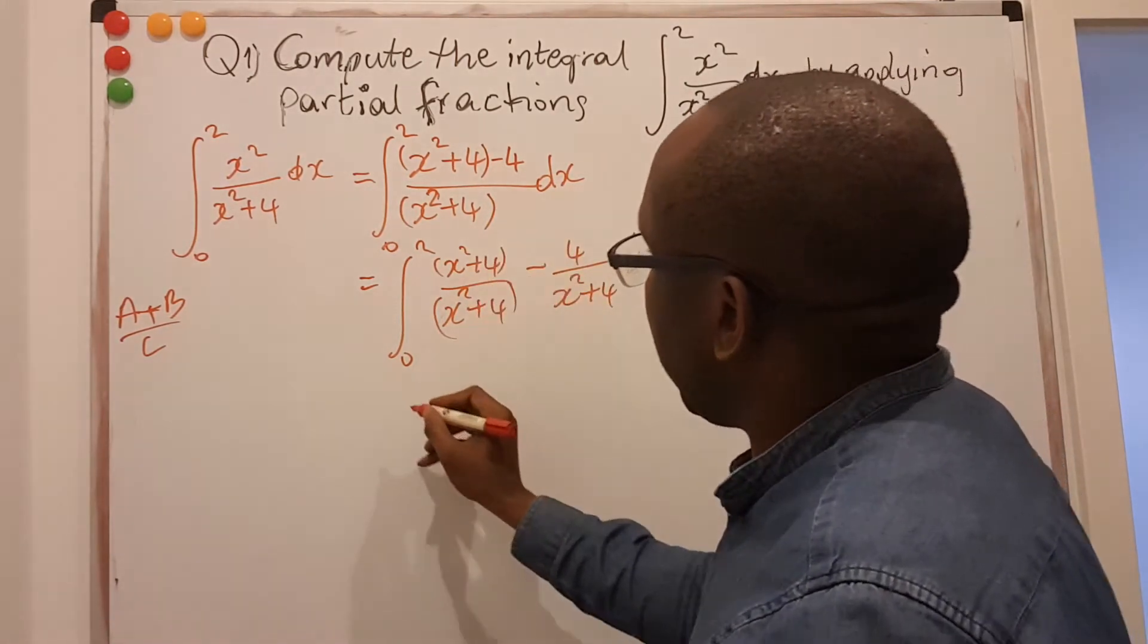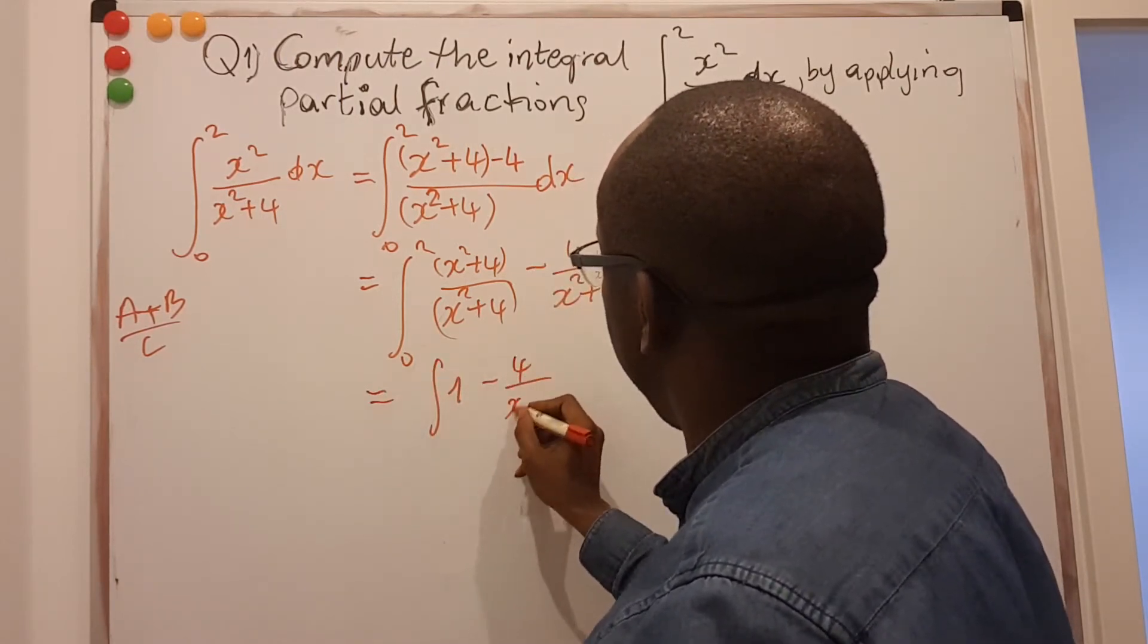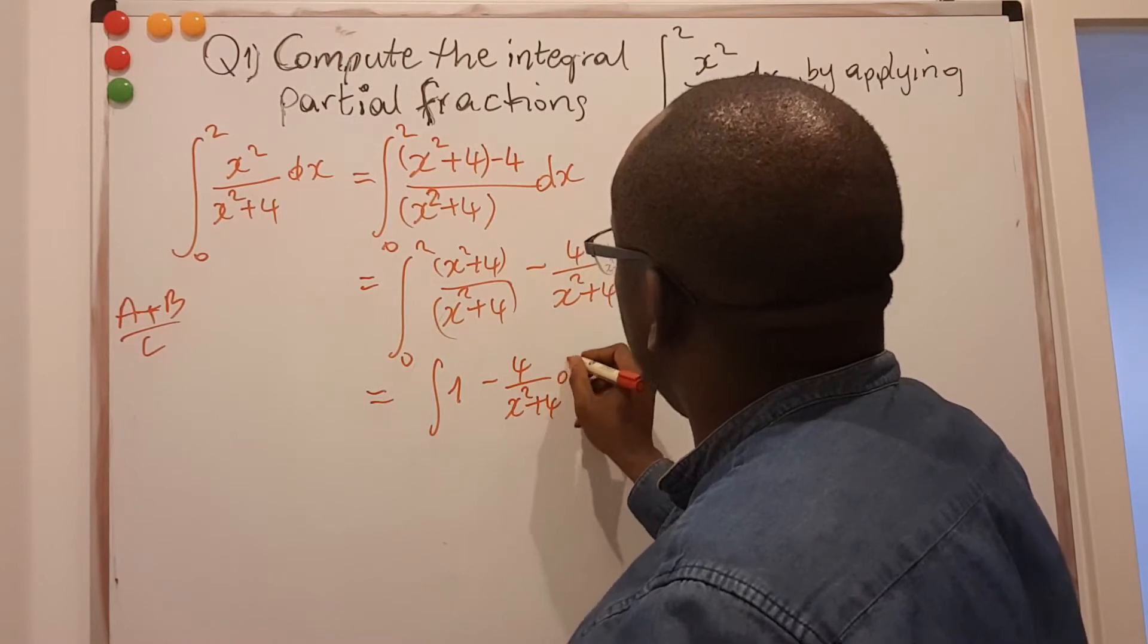This cancels and I get one there. So this is the integral of 1 minus 4 divided by x squared plus 4 dx.